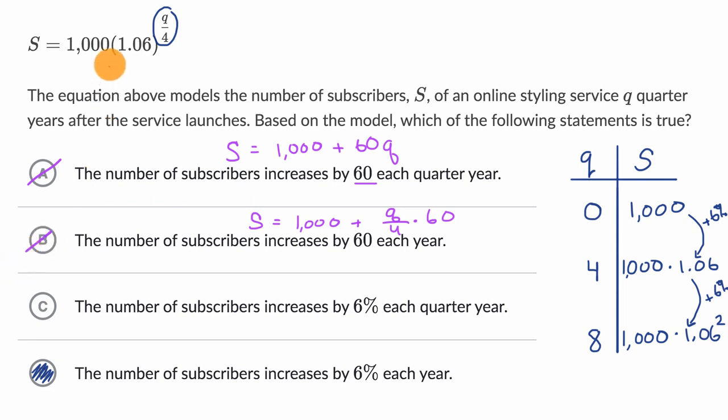And then the number of subscribers increases by 6% each quarter year. Well, the exponential that would describe that would be our initial number of subscribers times 1.06 not to the q over four, that would just be to the q. So that every time a quarter goes by, you would increase by 6%. But here we clearly have q over four, so every four quarters we're increasing by 6%.